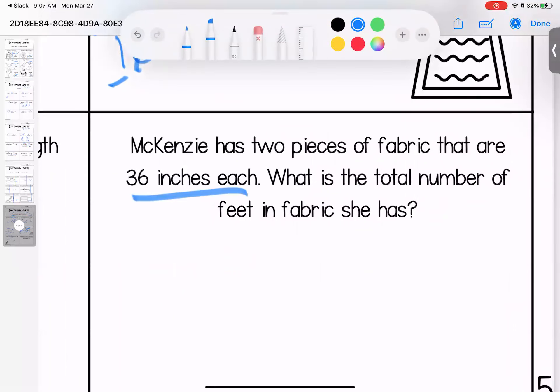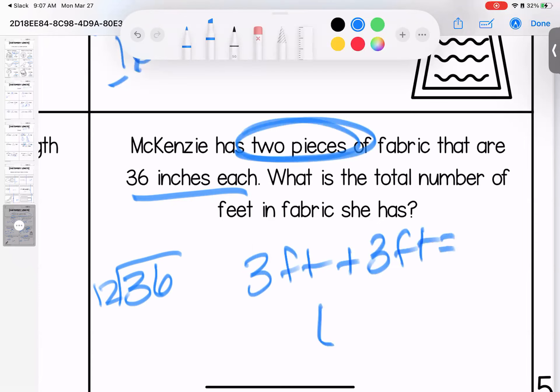Last one, Mackenzie has two pieces of fabric that are 36 inches each. What is the total number of feet in fabric? So this one was a trickster. I needed to first figure out how many feet were in these inches. 12 goes into 36 three times. But I see that I have two of these, so I have to double my answer. It gives me six feet in total. If you have questions, please bring them with you to class. Have a good weekend.